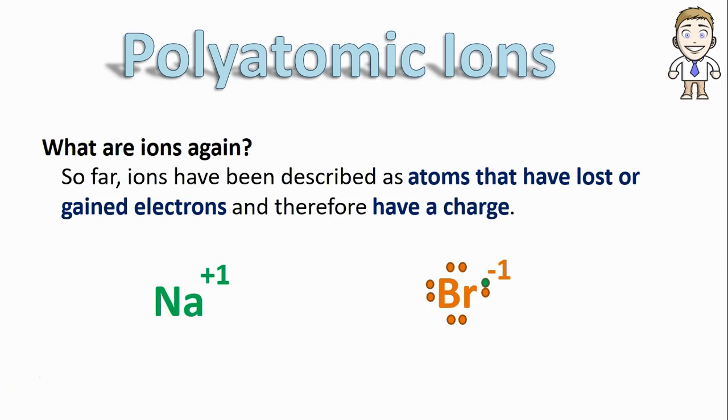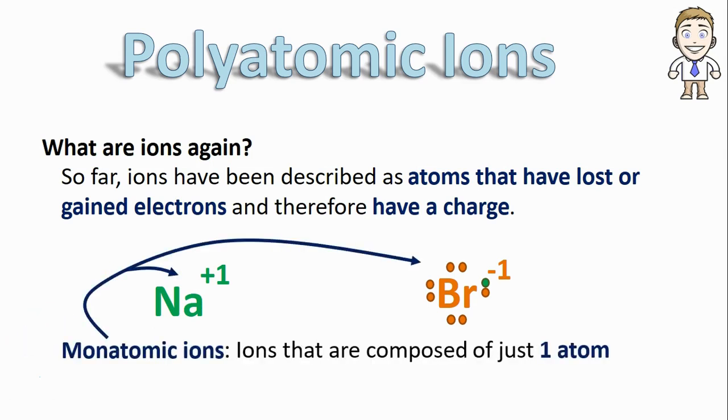What we've left out of this description is that these ions are really just one type of ion called a monatomic ion, which means that they're composed of just one atom. This prefix mono is always going to tell you that there's one of something. In this case, for these ions, they're each made of only one atom.